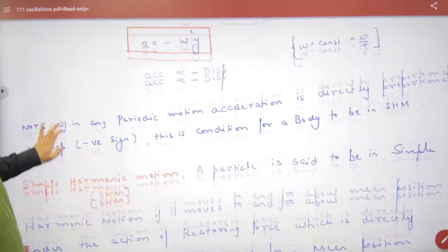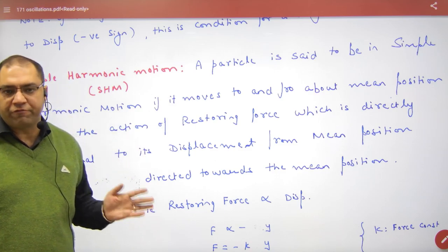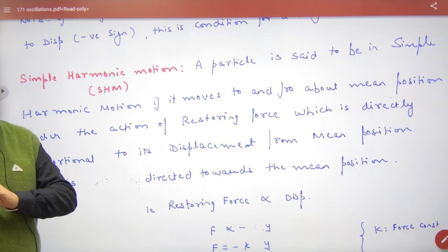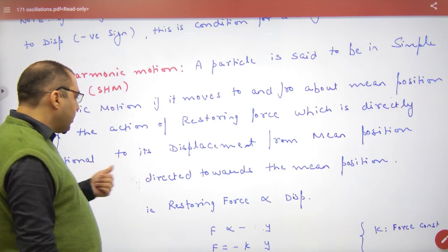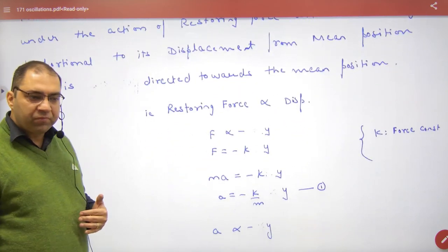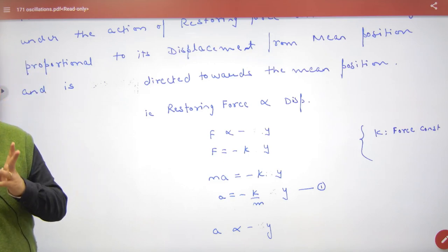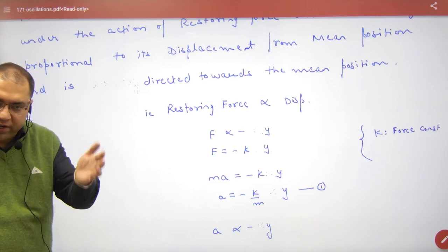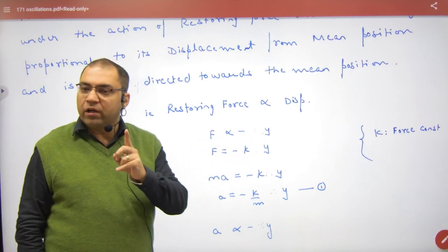Simple harmonic motion is when any body moves to and fro about its mean position under the action of a restoring force, which is directly proportional to the displacement from mean position. As an example, consider a spring-mass system. There is a mass attached to a spring and it moves to and fro.